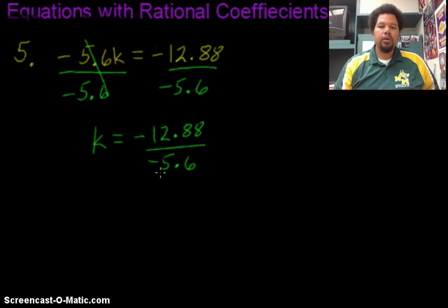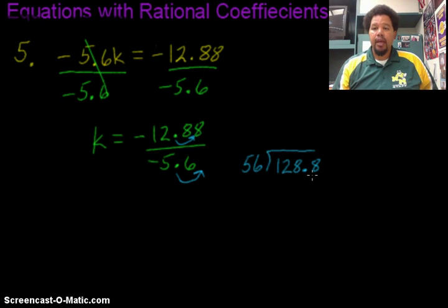Now in order to divide by this decimal number on the bottom, I have to make it into a whole number by moving the decimal point one time to the right. Now I only had to move it one time. So that means I only moved the top one one time. So now I get the division problem of 128.8 divided by 56. So now I can go ahead and divide since this is a whole number.